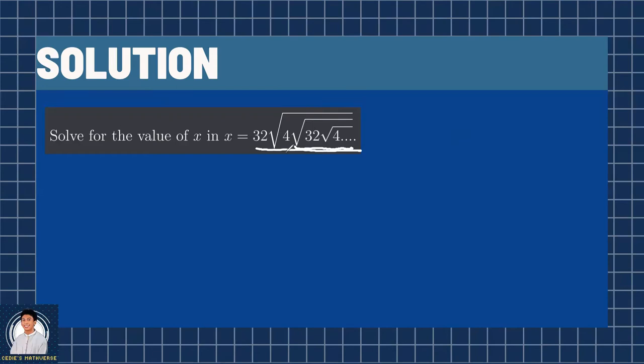With that in mind, we can substitute x into this second set of 32 square root of 4 and so on. So we can have x equals 32 square root of 4 square root of x.